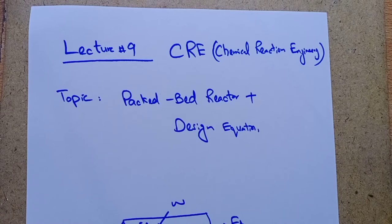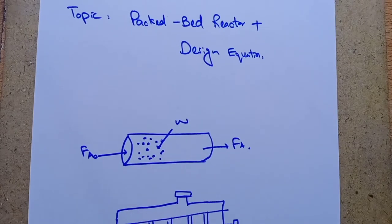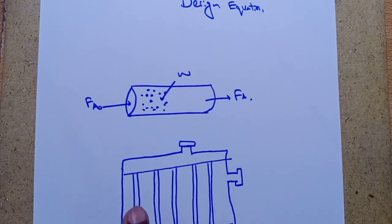The principle difference between reactor design calculation involving homogeneous reaction and those involving fluid-solid heterogeneous reaction is that for the latter, the reaction takes place on the surface of catalyst. Consequently, the reaction rate is based on mass of solid catalyst W. In the packed bed reactor we use solid catalyst. This is the PBR, packed bed reactor.